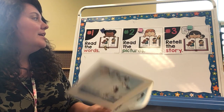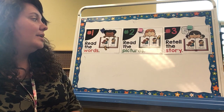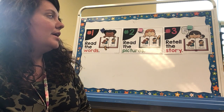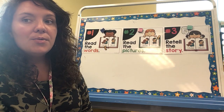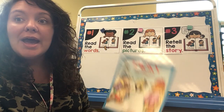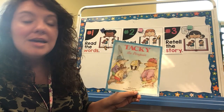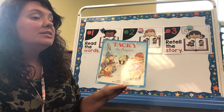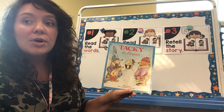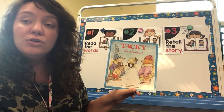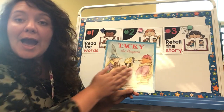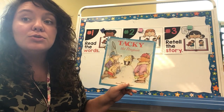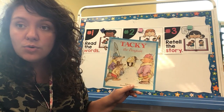The third way to read is to retell the story. We've read Tacky, so that means you can tell the story again using your own words of what happened in the story. That's to retell the story.